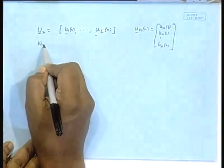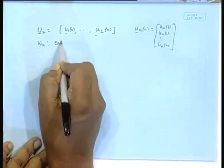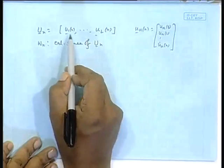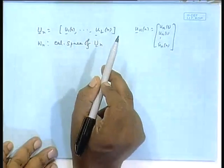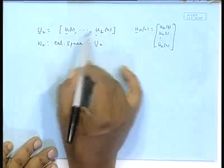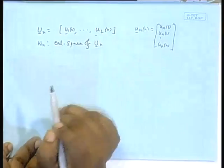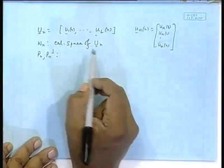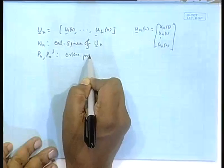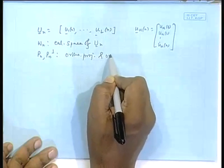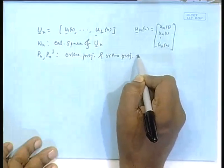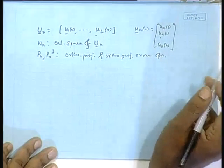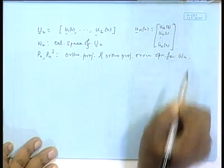The column space w_n is the space spanned by the columns of this matrix. There is a space spanned by the columns of this matrix - I call it loosely the column space - and there is w_n, p_n, and p_n_perpendicular. They are the orthogonal projection and projection error operators for the space w_n.